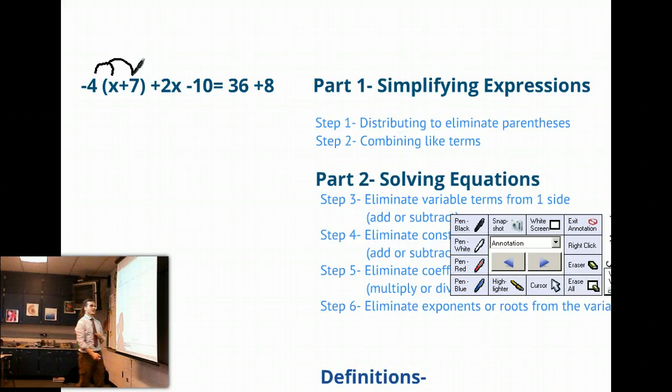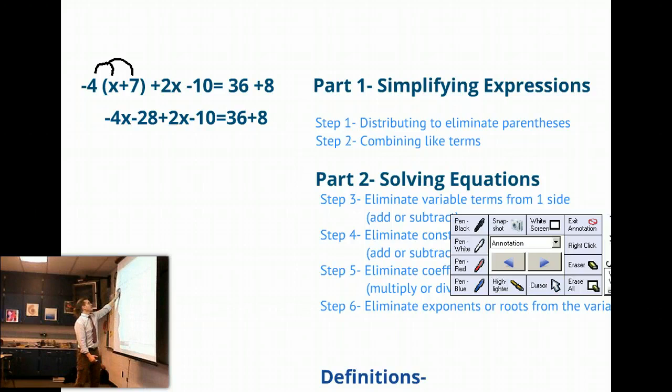And so if we did that, we would get negative 4x, and negative 4 times plus 7 would be minus 28. So you can see that there.